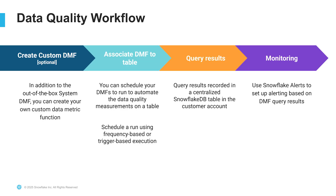Looking at the workflow, you can use an out-of-the-box function or create your own. You then associate those DMFs to the table and schedule that table or view on a frequency or trigger-based execution. You query the results, which reside in a central Snowflake table. Lastly, you can set up an alert to trigger notifications when quality thresholds are violated and tables need remediation. Once this is set up, it all runs automatically in the background.